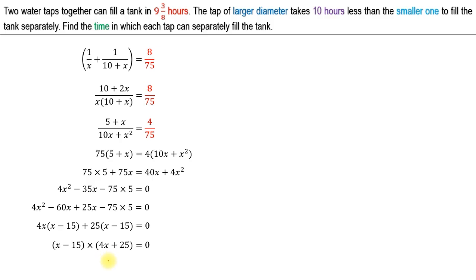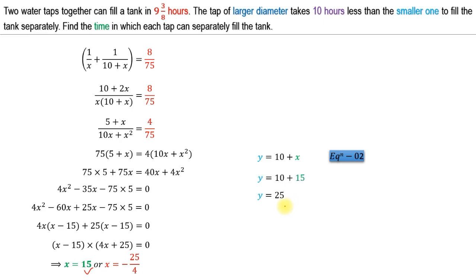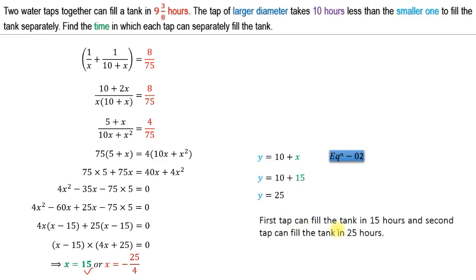From the factored form, X = 15 or X = −25/4. Since X represents time, it cannot be negative, so X = 15. From equation two, Y = X + 10 = 25. Hence the first tap can fill the tank in 15 hours and the second tap can fill the tank in 25 hours. That is the answer for this question. Thanks for watching — goodbye!